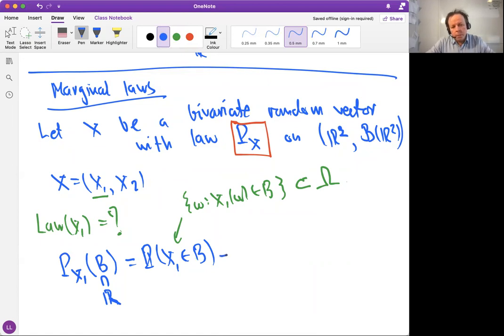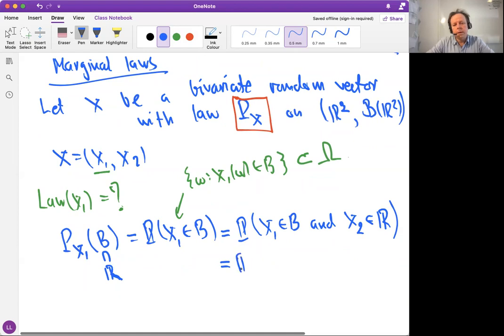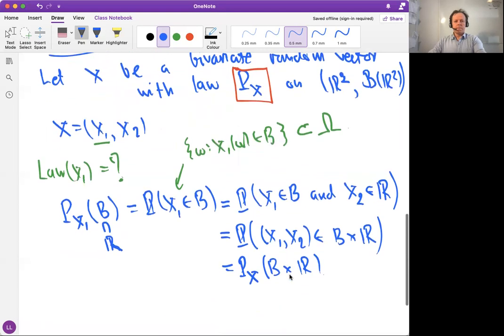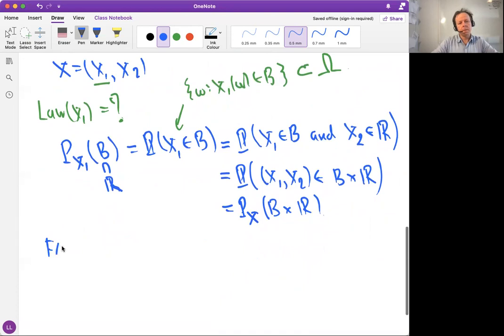Now, how can we get this event? How can we represent this event using both random variables? That's the key to this question. And the answer is, we write this as the probability that X₁ still belongs to B and X₂ belongs to somewhere. Of course, X₂ belongs to somewhere in the real line because it's a real-valued random variable. But this is trivial. But that's the key. Because now with this trivial thing, we can write it as the probability that X₁ and X₂ jointly belong to the set B times the real line. And now if you look at this, it is the joint law of X₁, or the law of the random vector, for B times R.